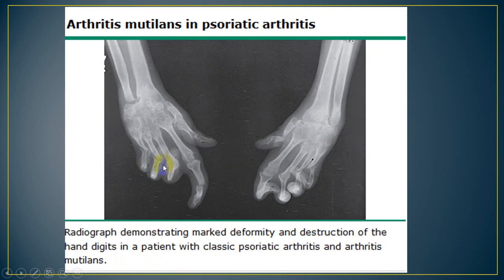In this patient, we see very severely deformed hands with complete destruction of several distal and proximal interphalangeal joints. This is called arthritis mutilans.